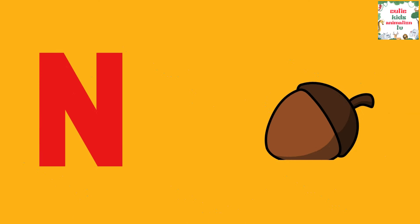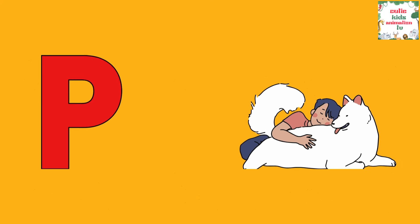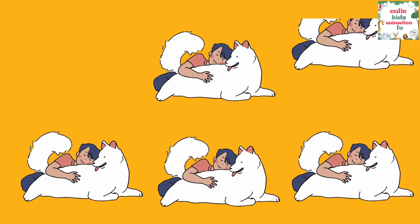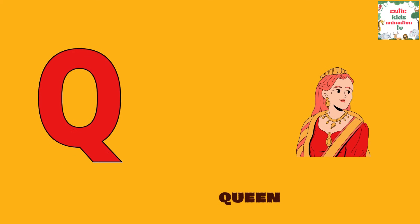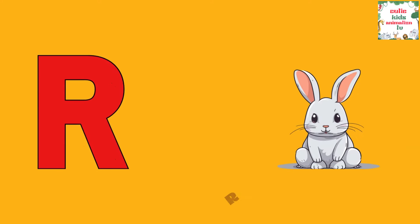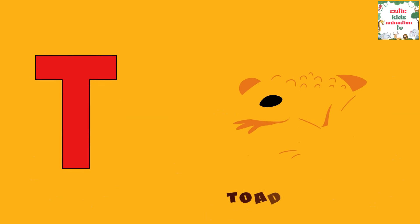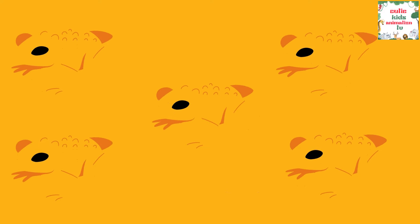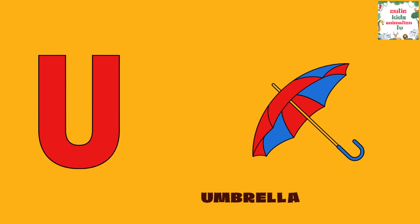M is for Mat, M-M-Mat. N is for Net, N-N-Net. O is for Orange, O-O-Orange. P is for Pet, P-P-Pet. Q is for Queen, Q-Q-Queen. R is for Rabbit, R-R-Rabbit. S is for Sun, S-S-Sun. T is for Toad, T-T-Toad.